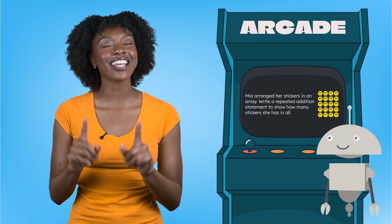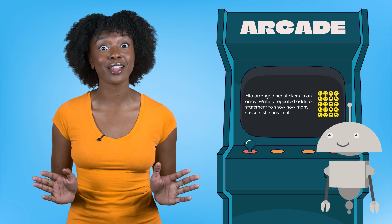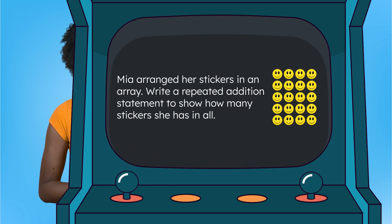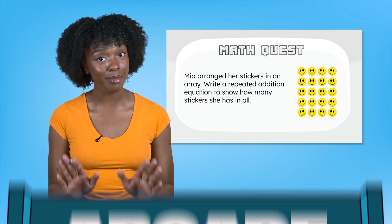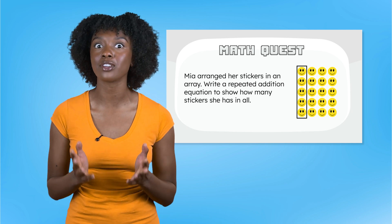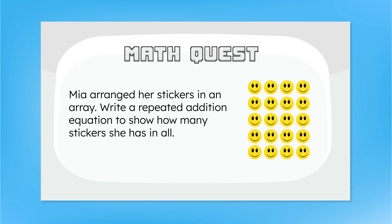All right, it's that time again. We'll need to use everything we learned today to solve our math quest. Grab your pencil and let's get started. Mia arranged her stickers in an array. Write a repeated addition statement to show how many stickers she has in all. Remember, you can use rows or columns to write a repeated addition statement. Pause here to solve this problem on your math quest, then check your work with skip counting and we'll compare our answers.